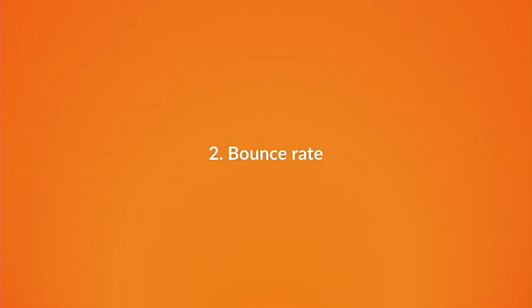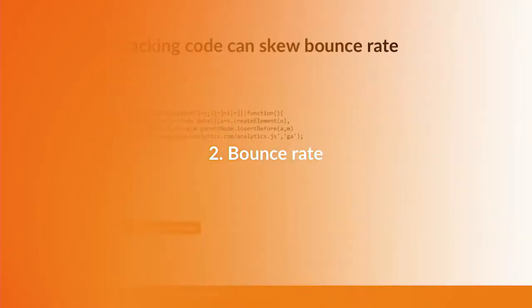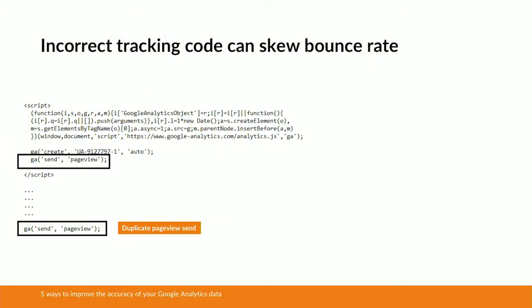I've talked about a few ways to improve the accuracy of the users metric — I'm now going to move on to the bounce rate metric. Incorrect tracking code can artificially skew your bounce rate. Take this example where we've got standard Google Analytics page tracking code, but you'll see a little bit further down the page that the very last line of that code has been duplicated. From the user's point of view they're not going to notice any difference — the website is going to work fine.